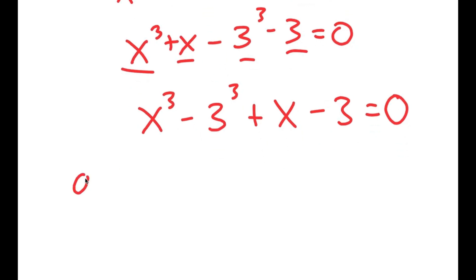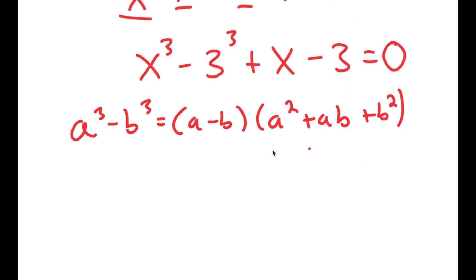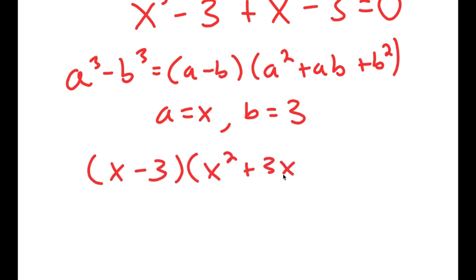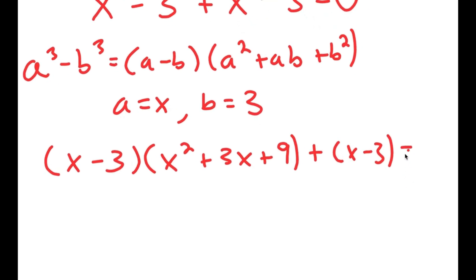If I have something in the form a to the power of 3 minus b to the power of 3, this is equal to a minus b times a squared plus ab plus b squared. So in this case, a is equal to x and b is equal to 3. I get x minus 3 times x squared plus 3x plus 3 squared, which is 9, plus I have my x minus 3 at the end, is equal to 0.